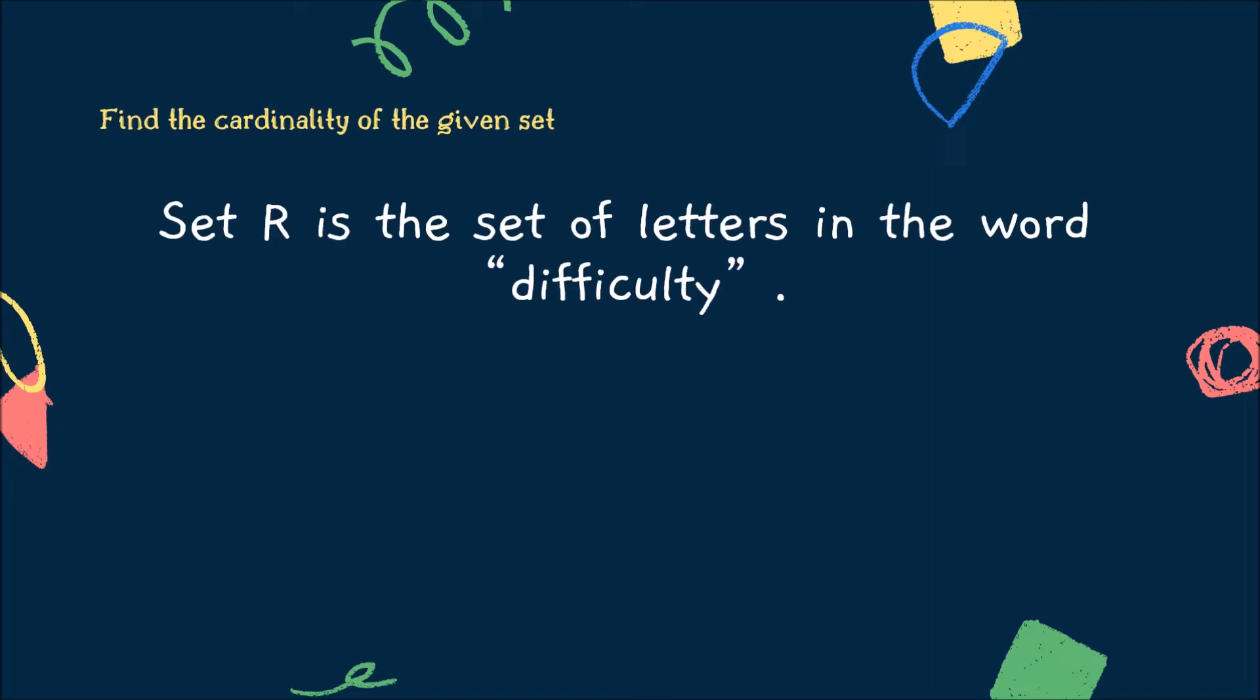Set R is the set of letters in the word difficulty. Thus, the set R contains element D, I, F, C, U, L, T, Y. When we write a set, we don't repeat the elements. Also, in finding the cardinal number, we omit the repeating elements. So, in this case, the cardinal number is equal to 8.